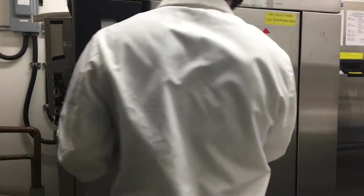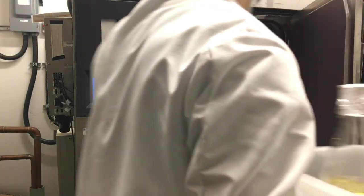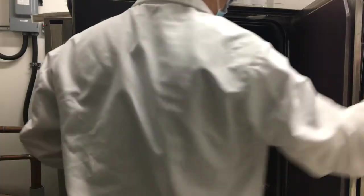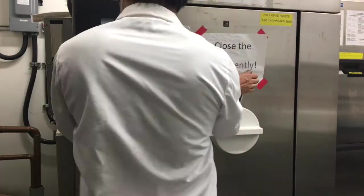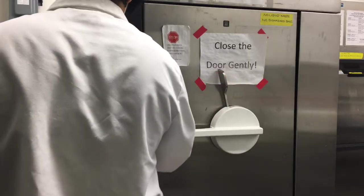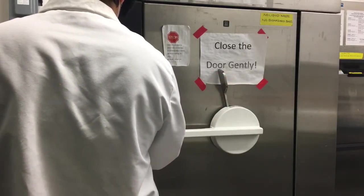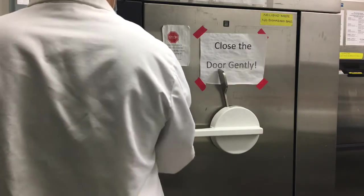When everything is ready, we can load the items to be sterilized into the autoclave on an autoclavable tray. Seal the chamber and set the program for liquid sterilization. The whole cycle should take about a bit more than an hour.